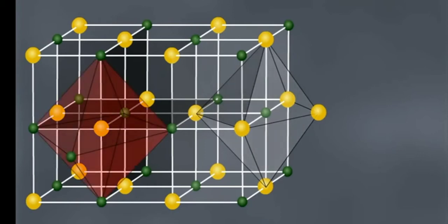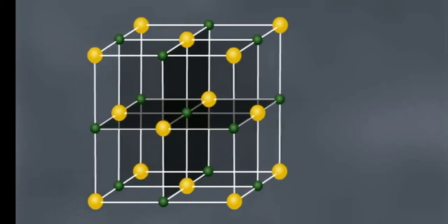Similarly, the Cl- ion will attract several Na+ ions. As a result, there is a regular arrangement of these ions in three dimensions as shown.